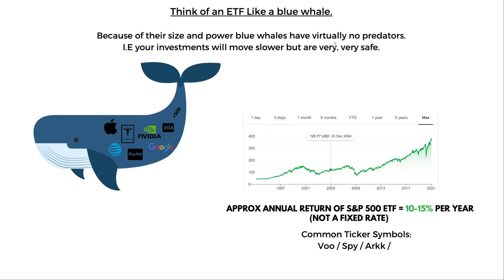Think of an ETF like a blue whale — because of their size and power, blue whales have virtually no predators. Your investments will move slower, like a whale, but they are very safe. The approximate annual return of the S&P 500 ETF is 10 to 15 percent a year. If you put in a thousand pounds or dollars, you'll approximately get 100 to 150 a year in returns — this varies, it's not a fixed rate. The chart goes up slowly, and when there's a dip people panic, but there's no reason to panic — we always come back up. Keep averaging in every month.